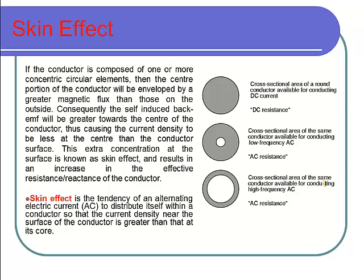Since the center portion of the conductor is not being utilized, we need to recalculate the effective radius of the conductor. The resistance formula is R = ρL/A, so resistance depends majorly on the cross-sectional area. Because AC current does not flow in the center part, the effective radius is reduced, which reduces the cross-sectional area, which in turn increases the effective resistance of the conductor.